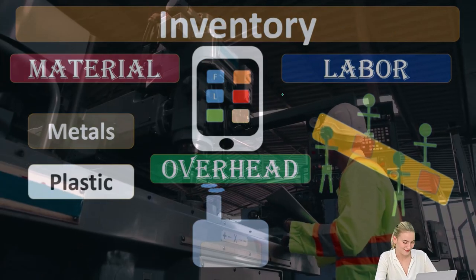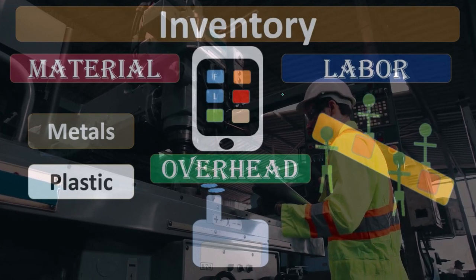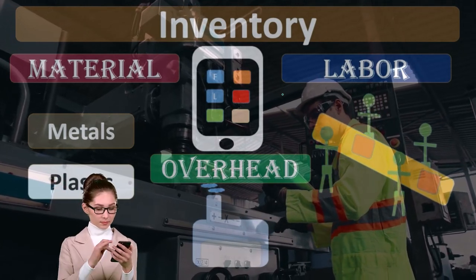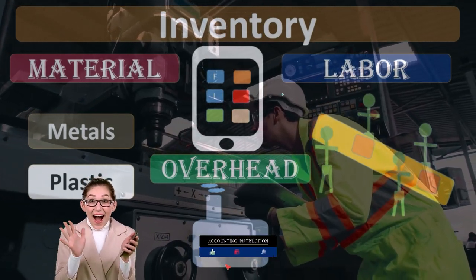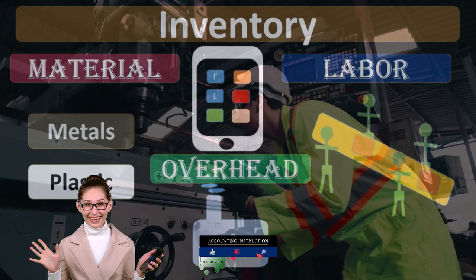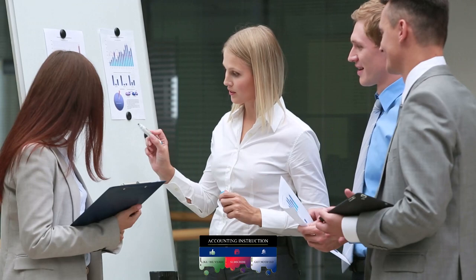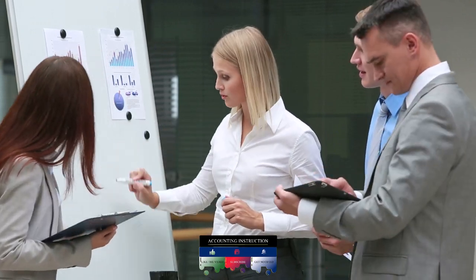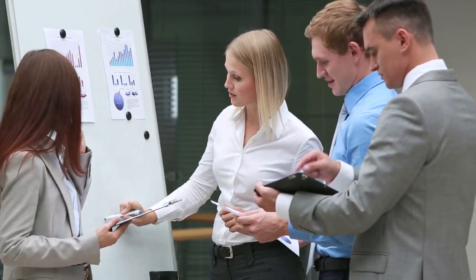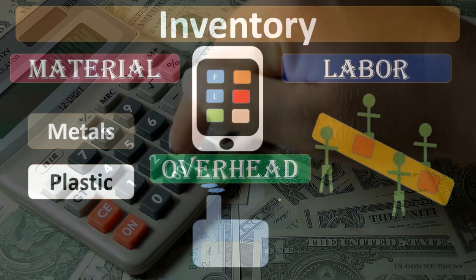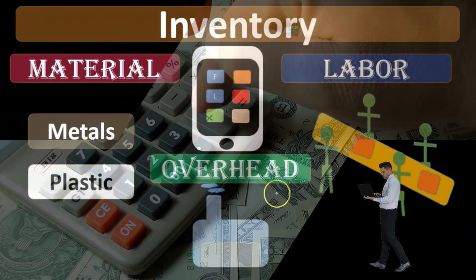Direct labor being that labor that will be applied directly to the production process of the specific job or process that we can apply out directly. Indirect labor being those costs to the job or process, such as the supervisor, such as maintenance on the factory, wages involved there that cannot be applied directly to a job or process, and therefore would be grouped in overhead along with everything else involved in the factory that we cannot apply to a job or process, that we would then use some kind of estimate in order to eventually apply and estimate them to a specific job or process.